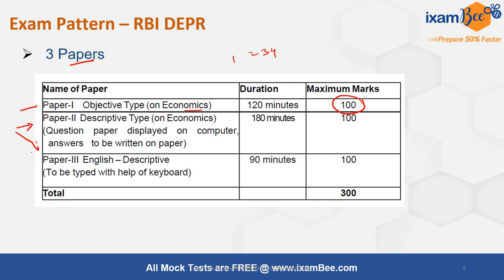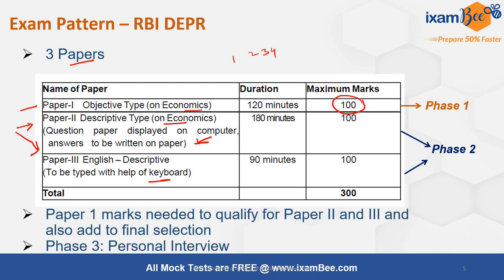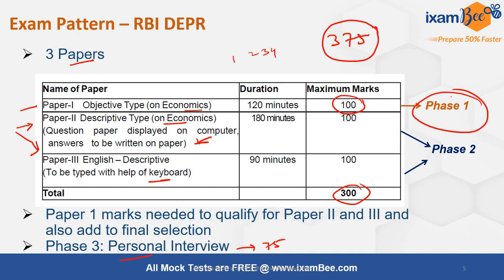Once you clear Phase 1, you attempt Phase 2, which has two papers — one is descriptive type on economics, and the second is on English, also descriptive. In Phase 2, answers are handwritten on paper while questions are displayed on screen. After clearing Phase 2, you proceed to Phase 3, which is a personal interview carrying 75 marks. Note that Phase 1 marks are also added for final selection.